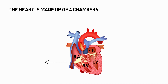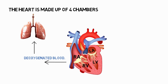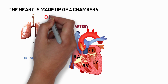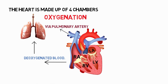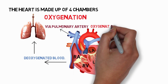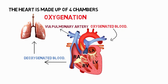The right side of the heart has deoxygenated blood, which then goes to the lungs via the pulmonary arteries for oxygenation. The left side of the heart receives oxygenated blood from the lungs via the pulmonary veins.